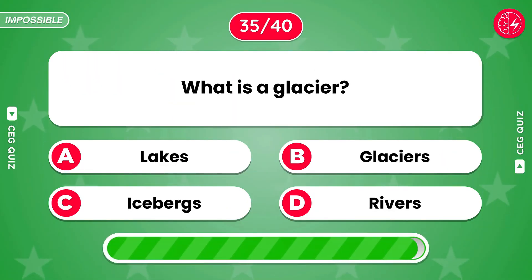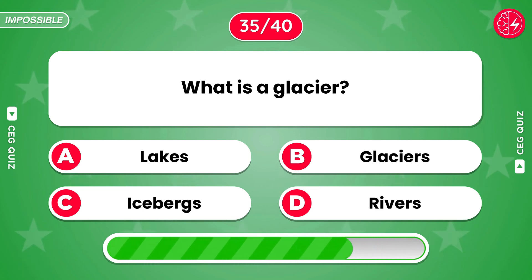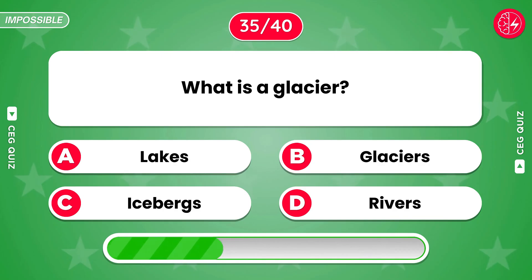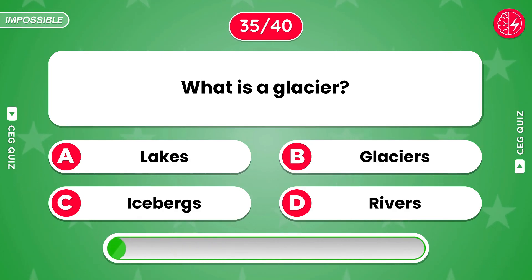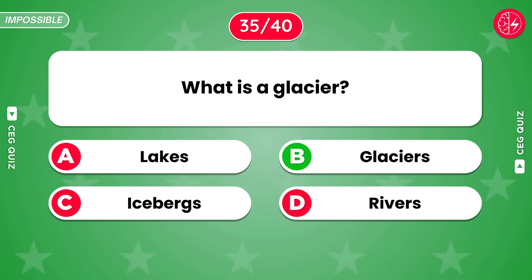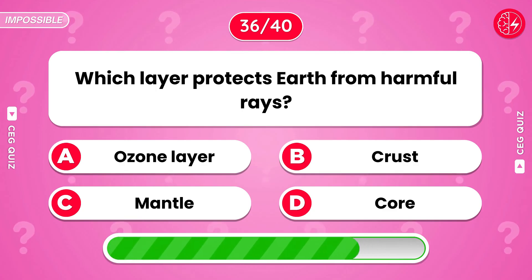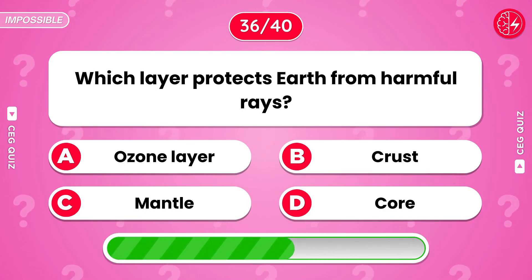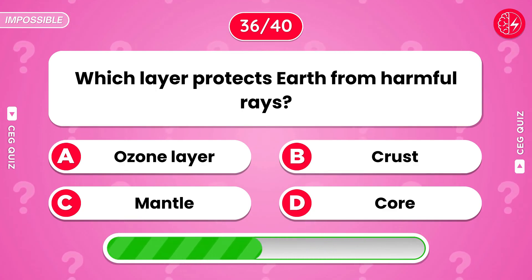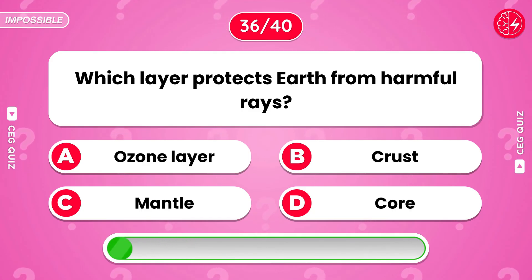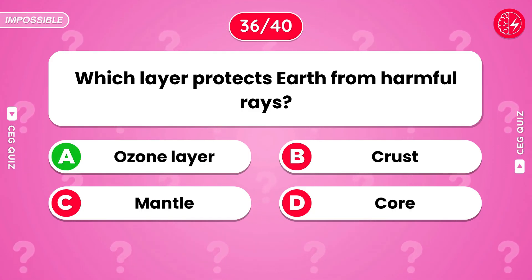What is a glacier? Glaciers. Which layer protects earth from harmful rays? Ozone layer.